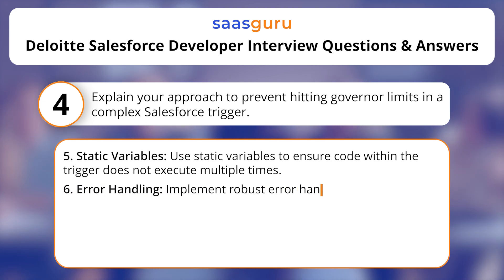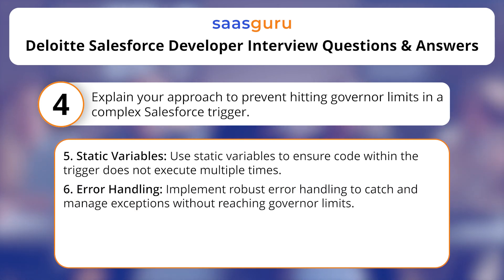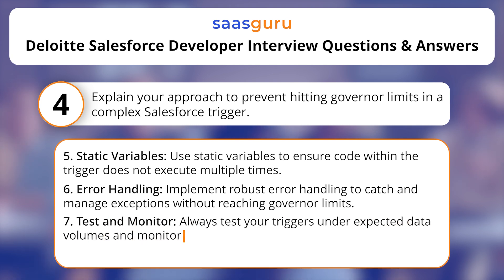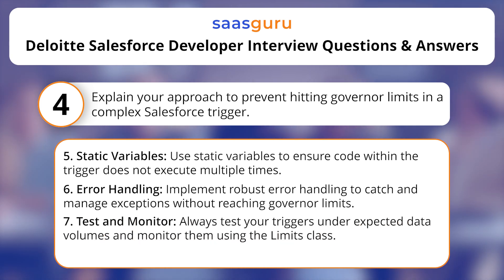Error handling — implement robust error handling to catch and manage exceptions without reaching governor limits. Test and monitor — always test your triggers under expected data volumes and monitor them using the Limits class.